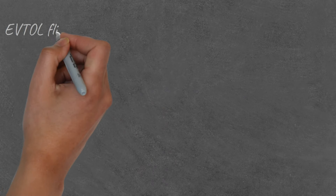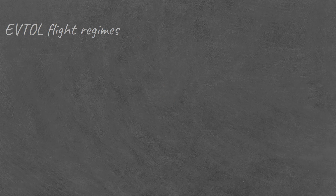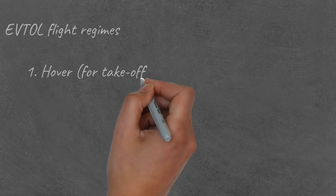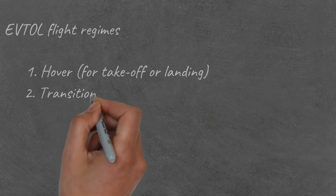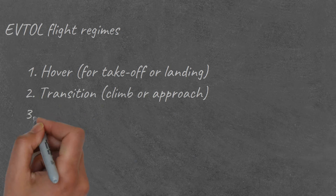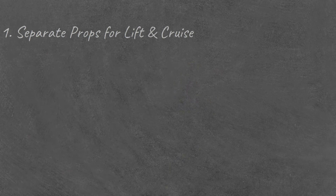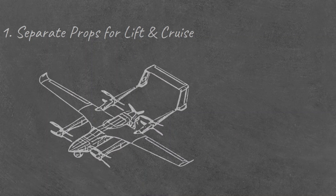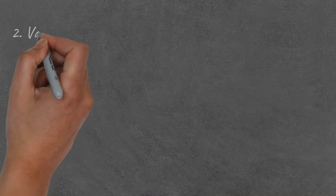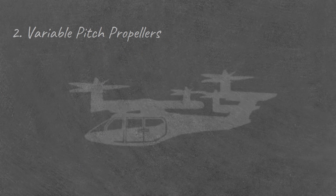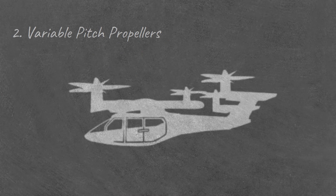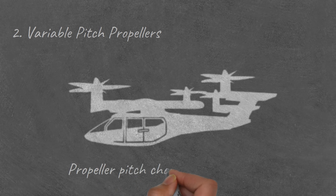The pitch of the propeller is like the gearbox in a car and ideally should change according to flow conditions. EVTOLs have three distinct operational regimes: vertical takeoff or landing, transition to horizontal flight, and cruise. To design an ideal propeller for each phase, there are two approaches: either have separate propellers for lift and cruise, or have propellers that can change their pitch based on flight mode.